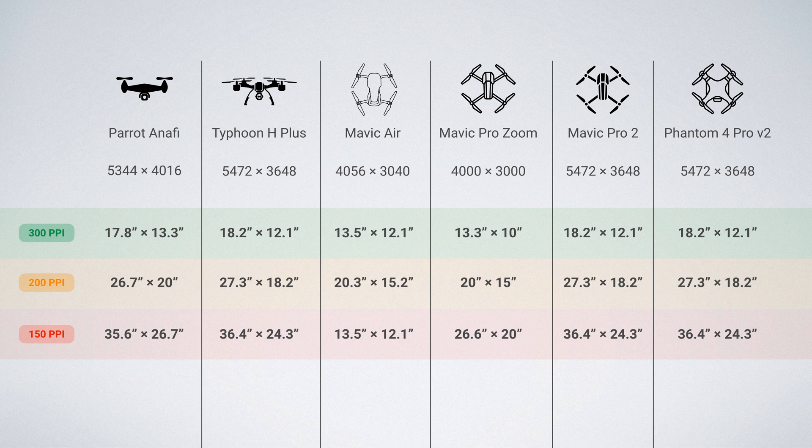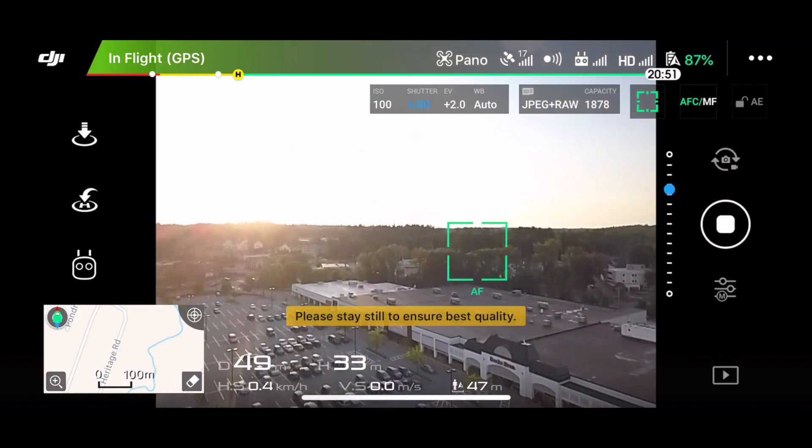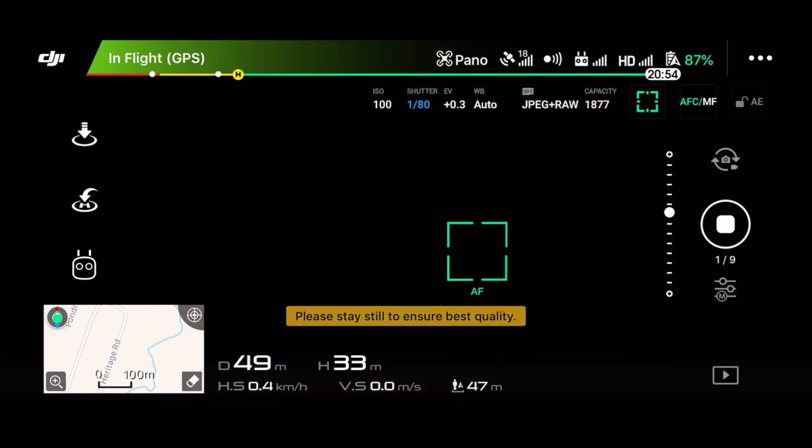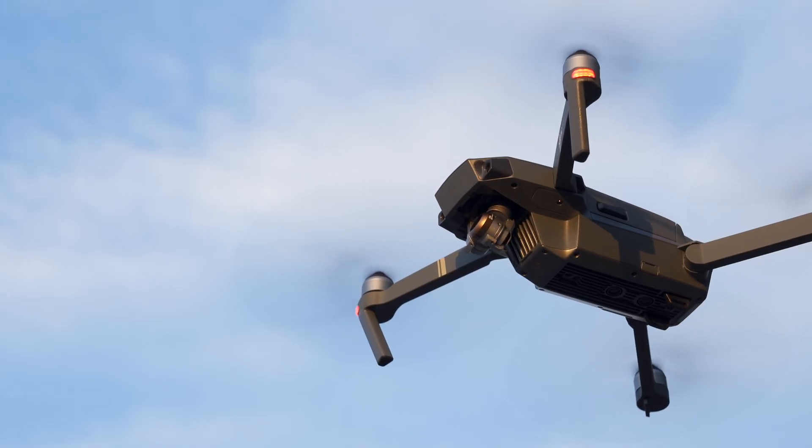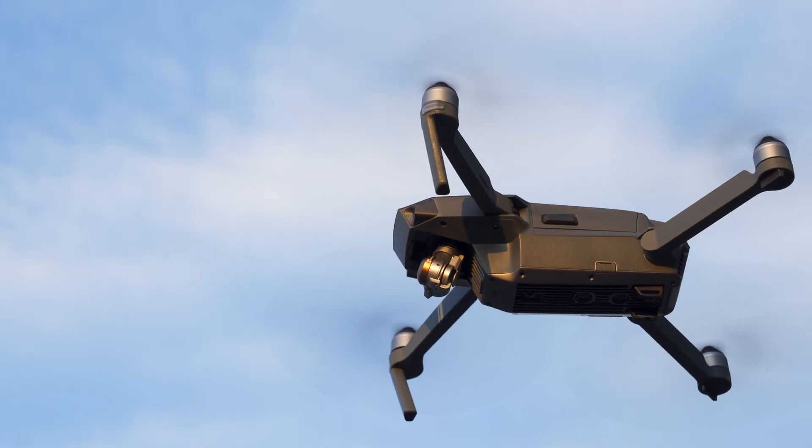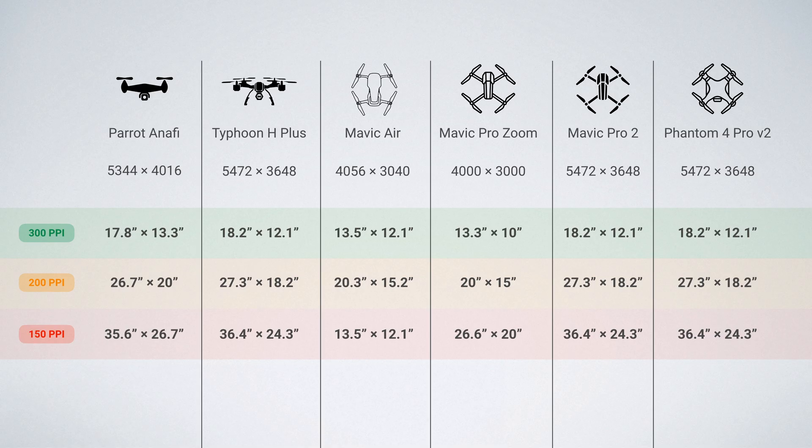If you still need a larger image at 150 pixels per inch, then you can use DJI's panorama mode. This will stitch together multiple photos to create one higher resolution image that can be printed at a larger size. You can see how this increases the print size for the Mavic Pro and the Phantom 4 series drones.